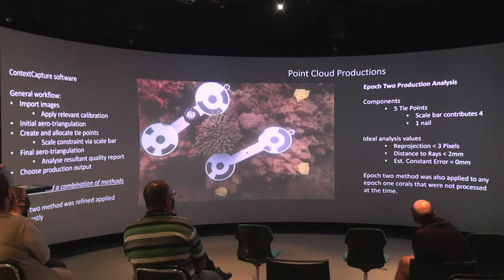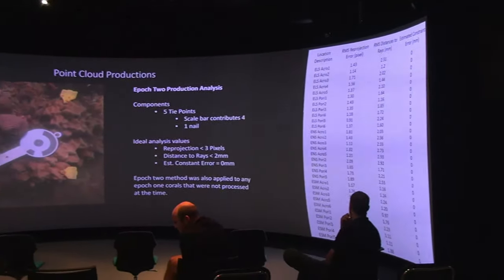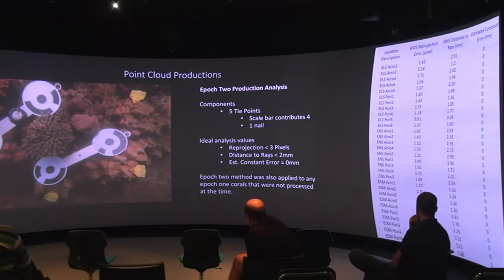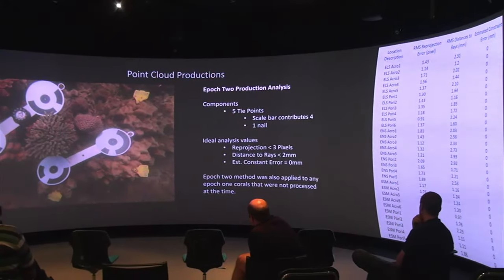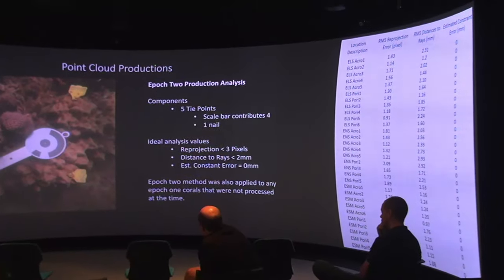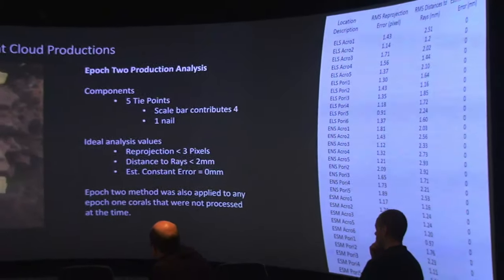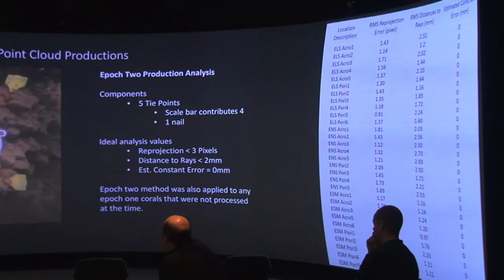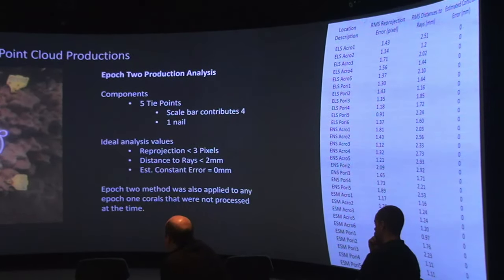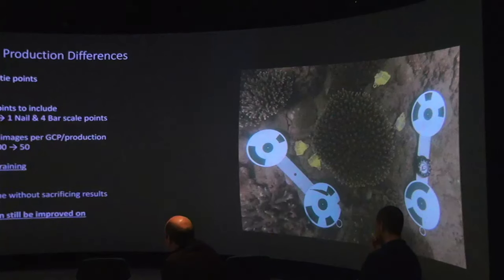If you were to use two or three scale constraints, you do find the errors start to vary a little bit one way or the other, just because you're trying to fix two points at the same distance and the adjustment can't always get it perfect. So that was really good to see. Overall, all our production quality reports are really good, and we can move on to the next stage of the process.